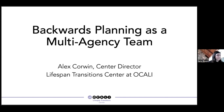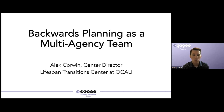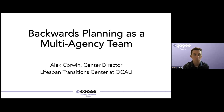I am Alex Corwin. I'm the center director at Ocali's Lifespan Transition Center. We work and focus on transition age youth, which is age 14 and up here in Ohio, but we also at our center focus on tools, resources, and training for youth all the way through adulthood and the lifespan. I'm happy to join you today and talk about backwards planning and how it can be done as a multi-agency team and some considerations for youth engaged with multiple systems and multiple partners as they work through to adulthood.